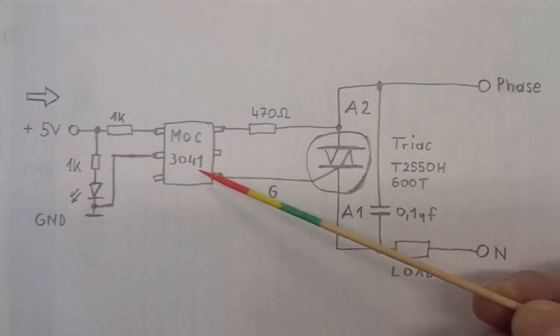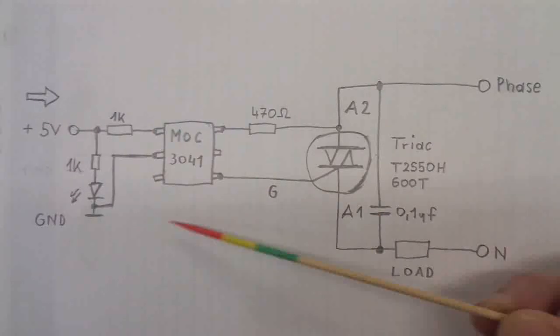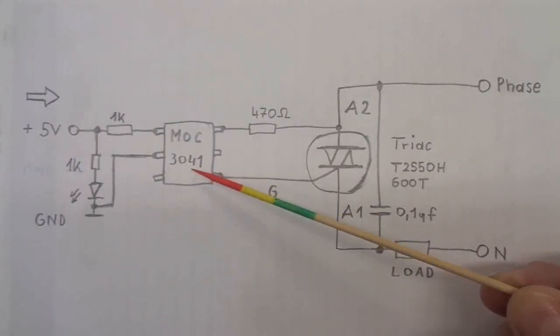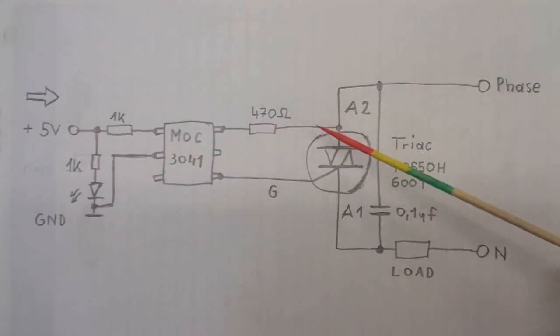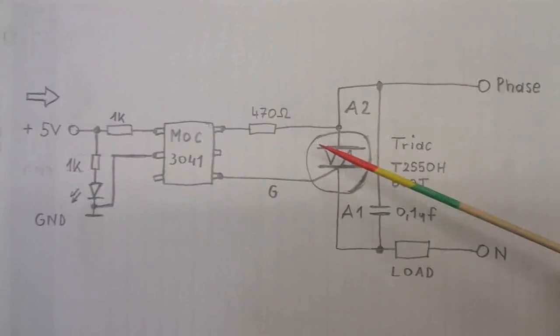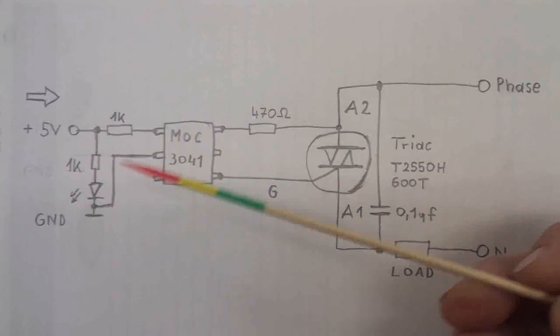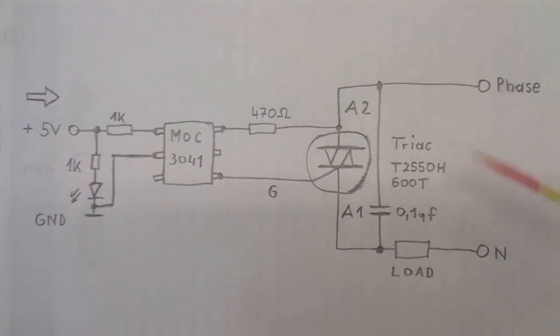We need a 470 ohm resistor. We need of course our triac, which is in my case a 25 ampere triac. We need a capacitor to keep the noise of the switching low, and of course we need some kind of screw terminals or terminal blocks.